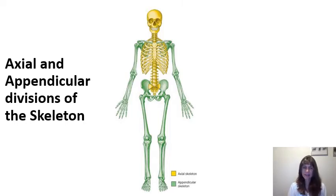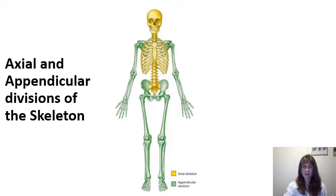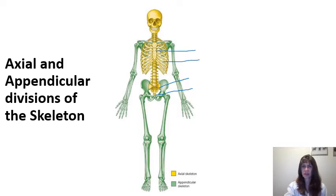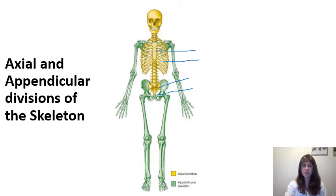In the skeletal system, the axial division includes the bones of your skull and all the bones of your spine, including your neck, your thoracic area, the lumbar region of the spine, the sacrum, and the coccyx. The axial division also includes the rib cage and the sternum. The appendicular portion of the skeleton not only includes the bones of the arms and the legs, but also the parts that hold the arms and legs to the rest of the skeleton.